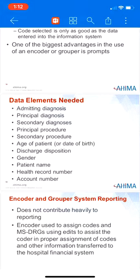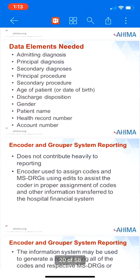The encoder and grouper are usually linked to the hospital's financial information system so that the codes can be automatically transferred to the information system for billing. Without this link, the coder would have to re-enter codes into the financial system. This double entry leaves room for data entry errors, which could in turn cause problems with billing and reimbursement. The encoder or grouper does not contribute heavily to reporting; rather, the encoder is more about assigning codes and MS-DRGs using edits to assist the coder and transferring other information to the hospital financial system.